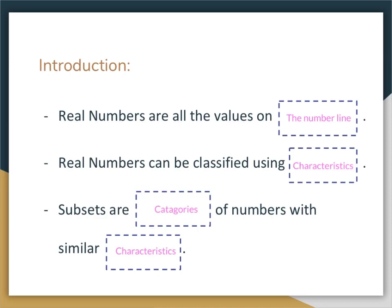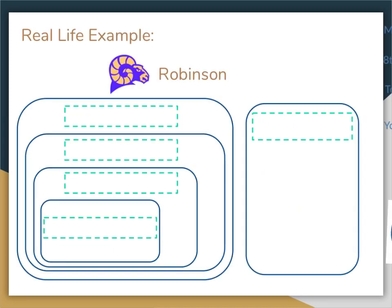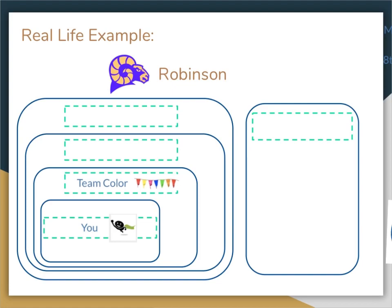Let's take a look at a real-life example of subsets and categories. Our real-life example is going to be about Robinson. At Robinson, there is you — you are you. There are some other things about you that not just make you a member of Robinson. At Robinson, you also have a team color. Everybody on the team will be on the red team, for example, but not every team member is going to be you. Just you is you. So inside that little circle is you by yourself.